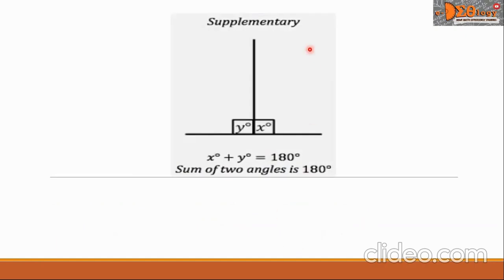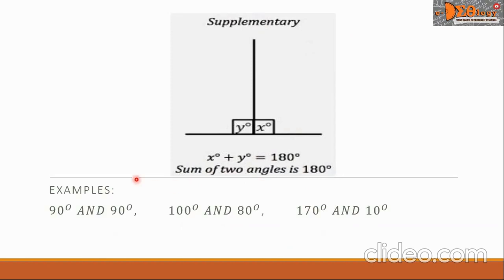The next group is supplementary angles. These are two angles whose sum is 180 degrees. Some examples of supplementary angles are 90 degrees and 90 degrees, another pair is 100 degrees and 80 degrees, and another pair is 170 degrees and 10 degrees.